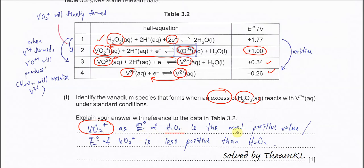Because the E⁰ of H₂O₂ is the most positive value among these. Or you can say that the E⁰ of VO₂⁺ is less positive than H₂O₂. So it stops here. Just remember, the reaction is continuous.